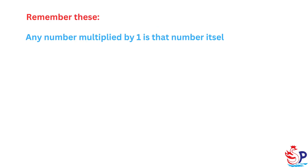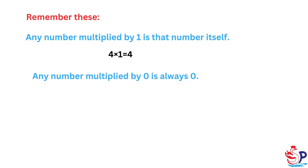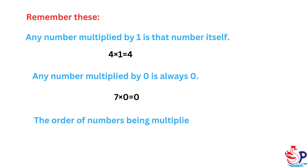Remember these: Any number multiplied by 1 is that number itself — 4 times 1 equals 4. Any number multiplied by 0 is always 0 — 7 times 0 equals 0. The order of numbers being multiplied does not matter — 6 times 4 equals 24 equals 4 times 6.